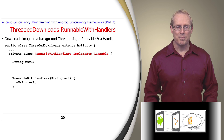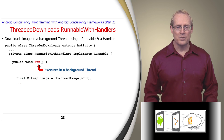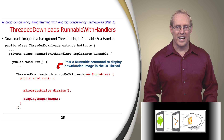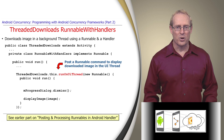This private class implements Runnable, and its constructor stores the requested URL in a data member. Its Run Hook method executes in a background thread and calls the Download Image method to retrieve the image from the server. If all goes well, the downloaded image is displayed in the user interface thread by posting an anonymous runnable command via the activity's RunOnUIThread method, which uses an internal handler, as shown in an earlier video.